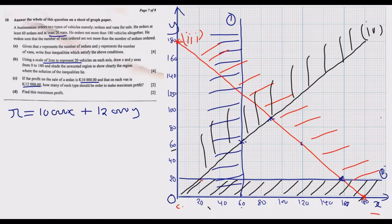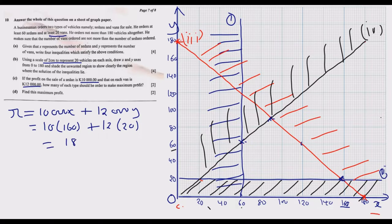At the first corner point (160, 20): profit = 10,000 × 160 + 12,000 × 20. This gives 1,600,000 + 240,000 = 1,840,000 kwacha.